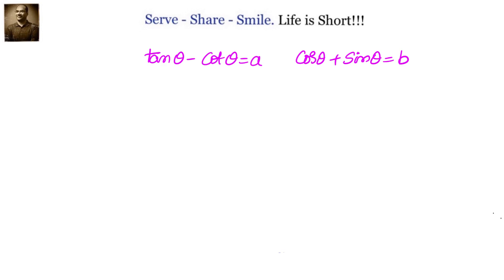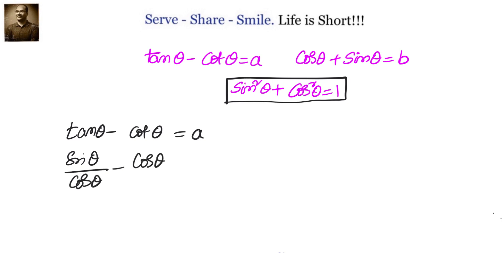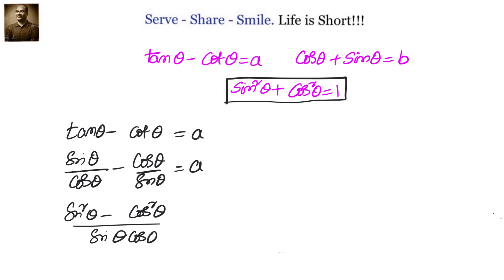Now, as usual, we will start with trying to convert them into sin and cos, because we know that sin square theta plus cos square theta equals to 1, and we want to leverage this identity to solve this problem. So let us write down tan theta minus cot theta equals to A in terms of sin and cos. It will become sin theta by cos theta minus cos theta by sin theta equals to A. Taking LCM, we will have sin square theta minus cos square theta by sin theta cos theta equals to A.